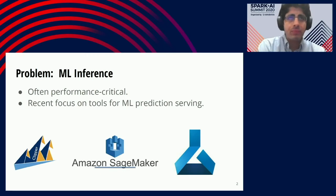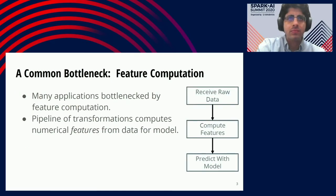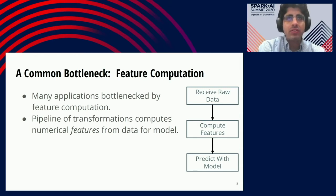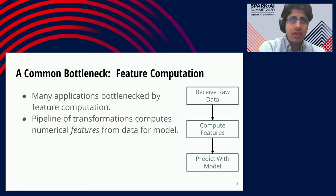As you already know, machine learning inference is an increasingly important problem today, and there's been a recent focus on tools for ML prediction serving. A common bottleneck in machine learning inference is feature computation. In many ML inference applications, a pipeline of transformations computes numerical features from raw data and then executes a model on those features. Often this feature computation is the most expensive part of ML inference.